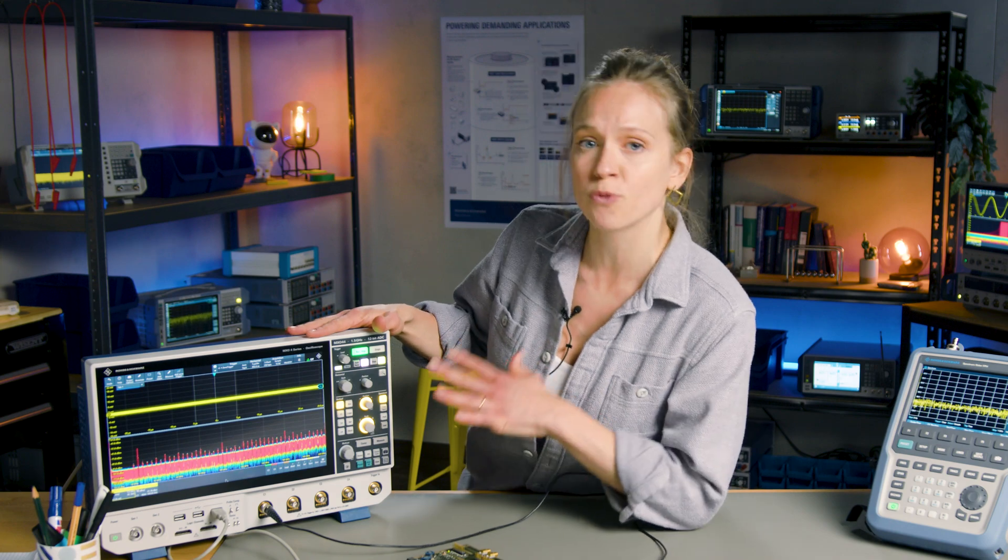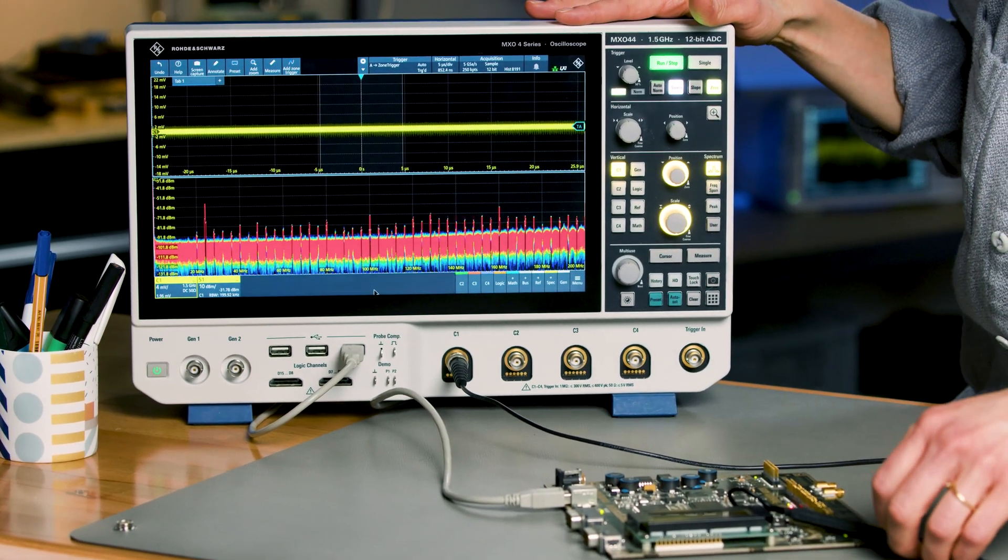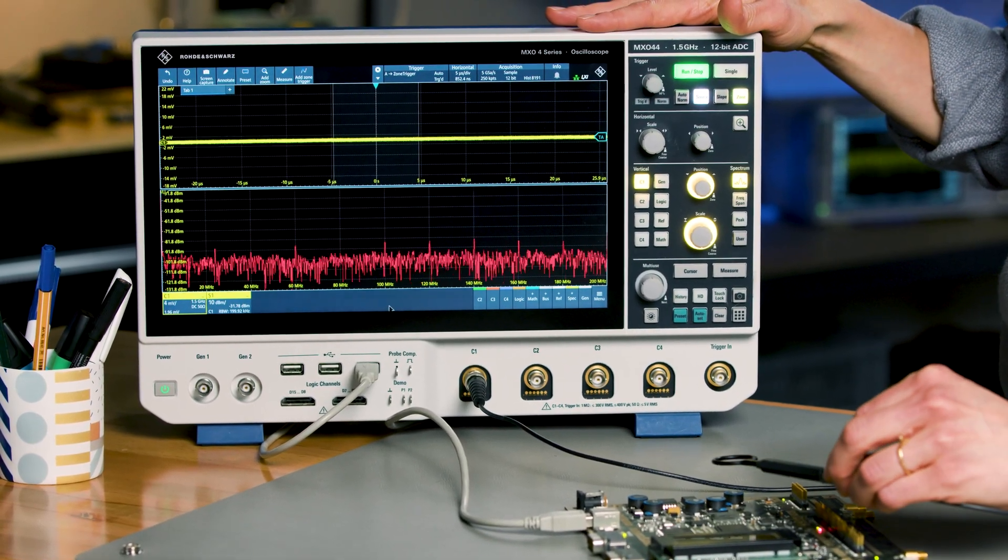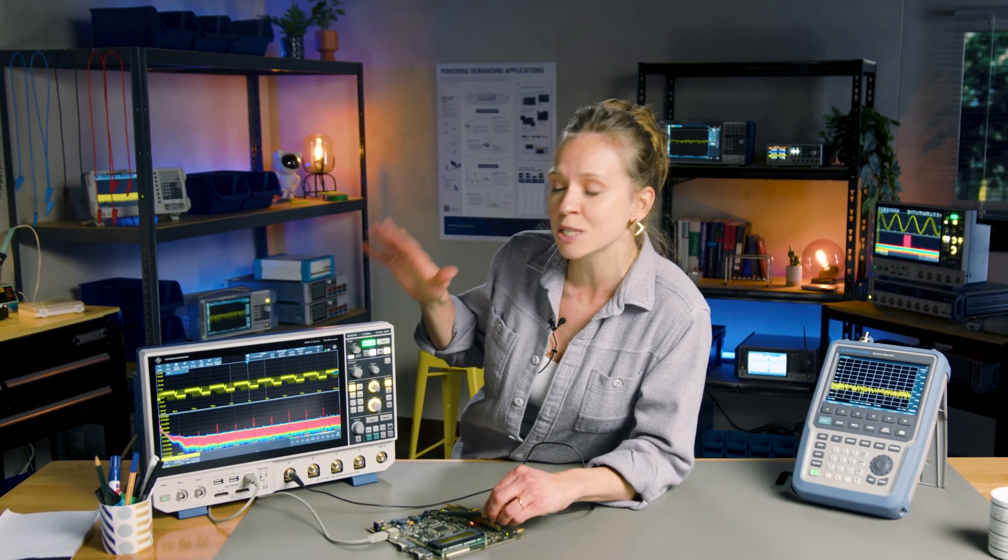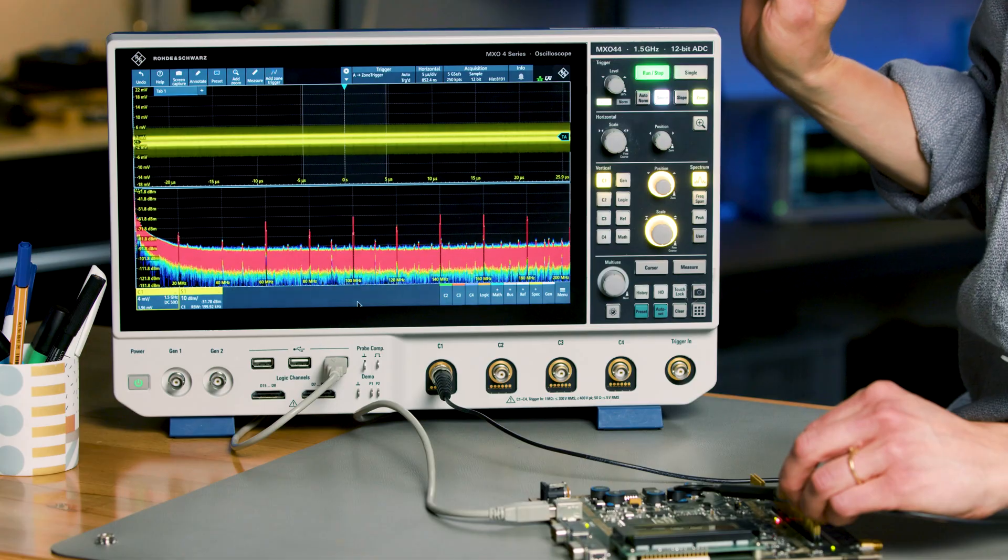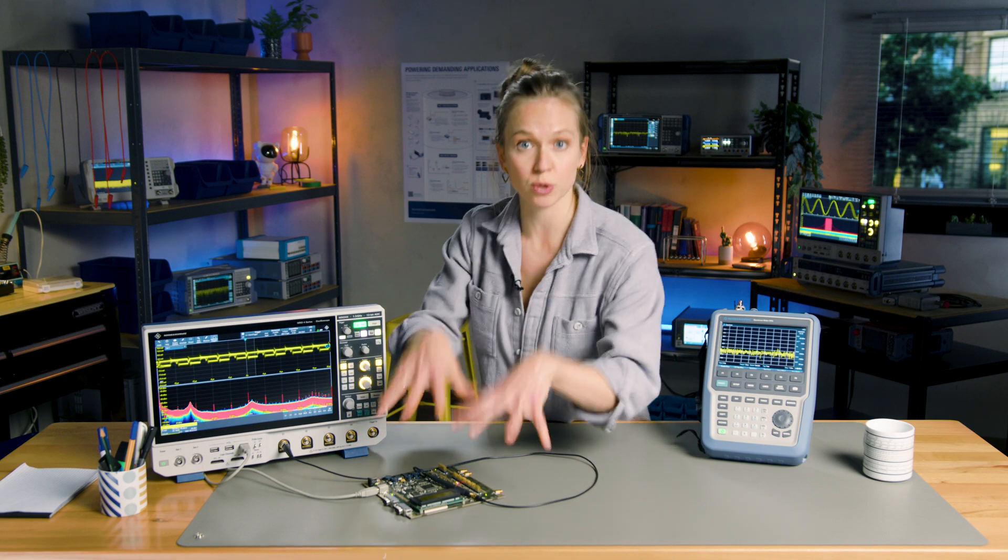To locate and analyze these problems, let's start with the MXO4 oscilloscope. It excels at visualizing transient signals in real time. The high update rate and 12-bit resolution make even subtle EMI signals easy to detect. With its advanced trigger modes, you can isolate specific disturbances and analyze their impact on your design.